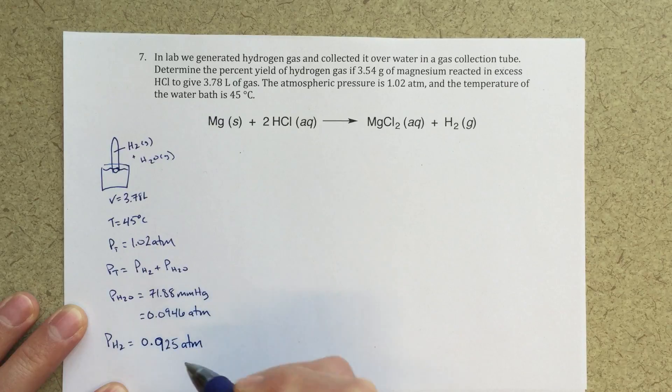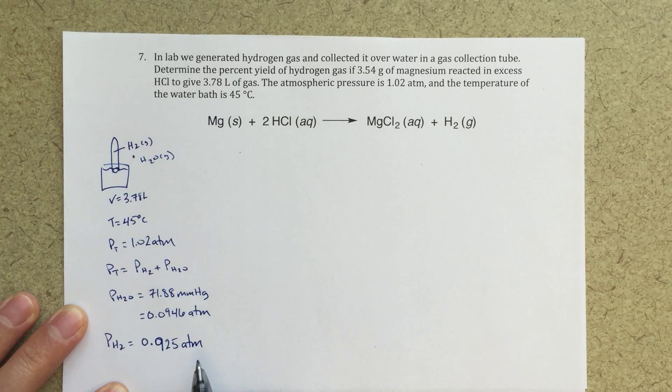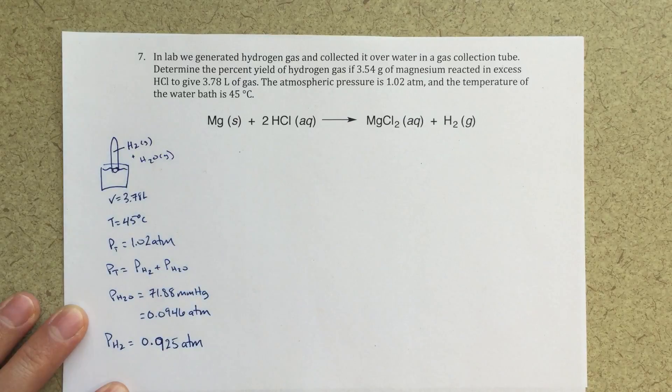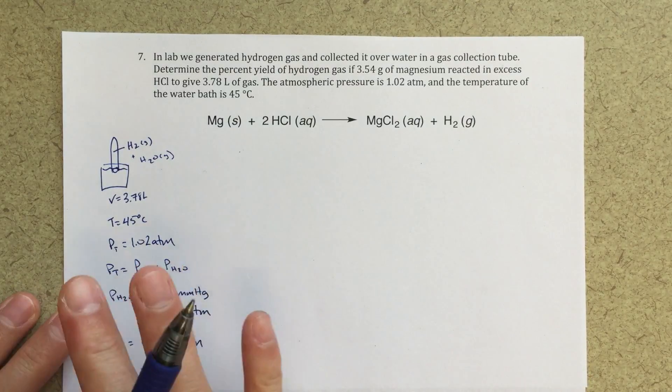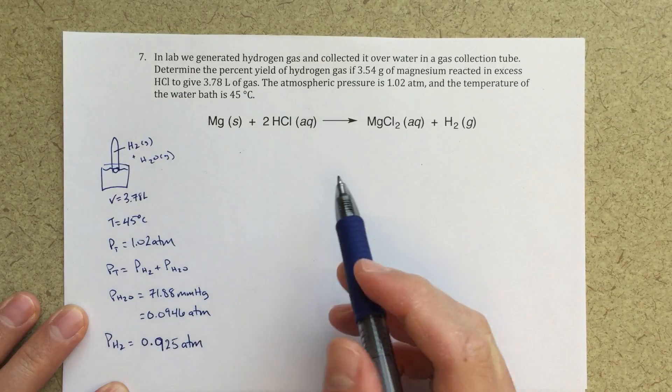And then I can solve for pH2 as 0.925 atmospheres. So that looks a little bit funny there. But 0.925 atmospheres is my partial pressure due to hydrogen in this tube. Okay.